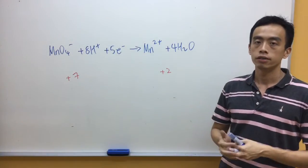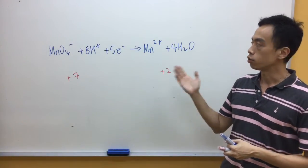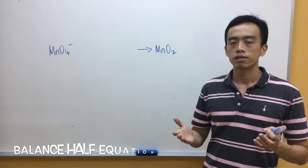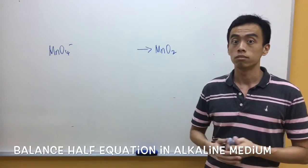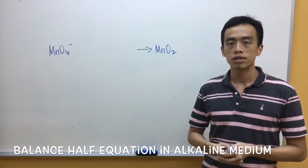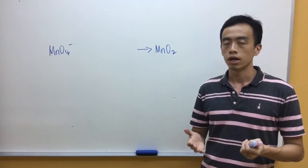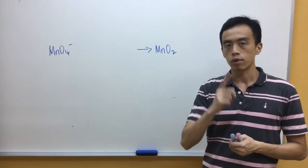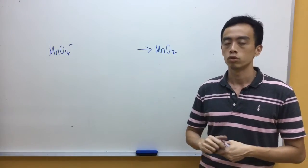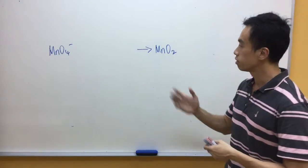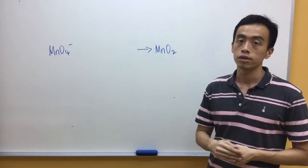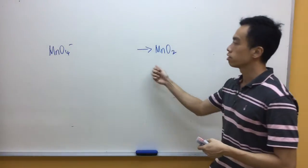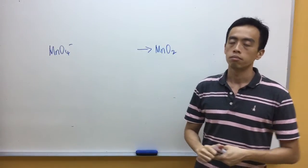So this is how we balance a half equation in acidic medium. Now let's try to balance this half equation in alkaline medium. Remember, for alkaline medium the method is exactly the same as for acidic medium — after that we just add one more step. The first thing is we balance the Mn: both sides of the equation have one manganese, so manganese is balanced.